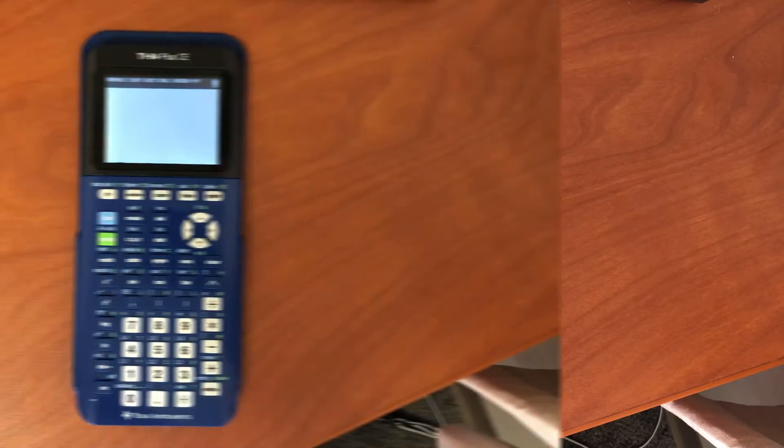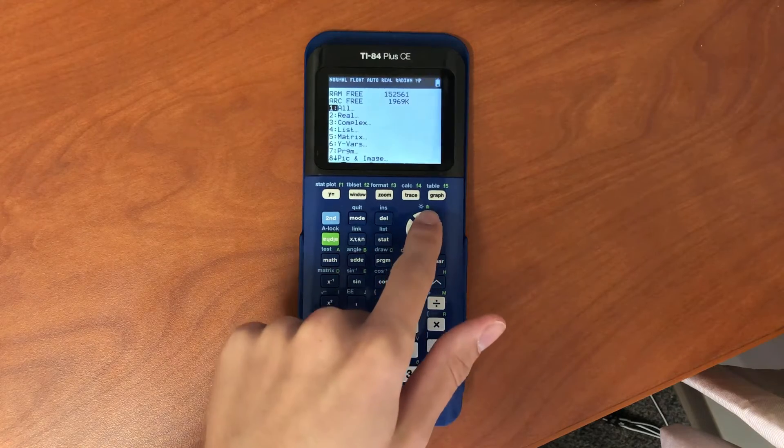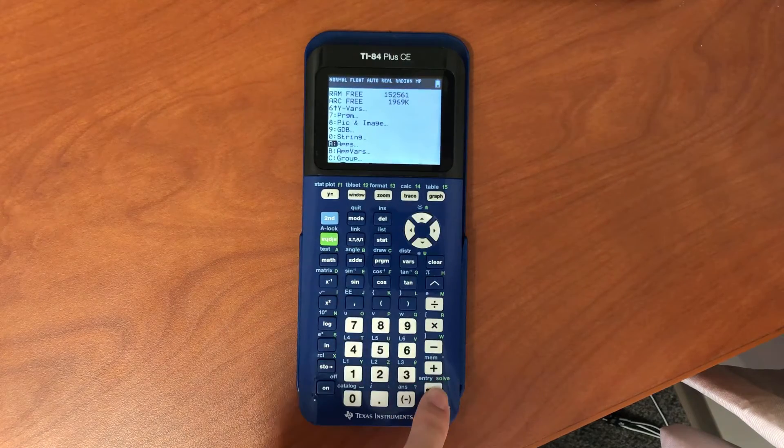To uninstall existing versions of Cesium, press 2nd, plus, 2, then scroll down to apps and press enter. Press del on Cesium and select yes.